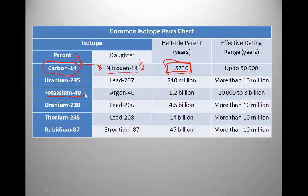Potassium-40 is an unstable isotope of potassium, and it decays to argon-40. For half of the potassium-40 to decay to argon-40, it takes 1.2 billion years. So potassium-40 has a half-life of 1.2 billion years.